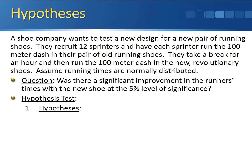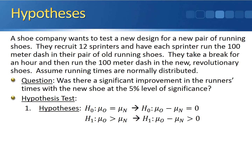Here are the hypotheses. The null hypothesis is that the before and after times are equal, while the alternative hypothesis reflects the idea that the average time for the old running shoes is greater than the average time for the new running shoes. We need the hypothesized difference of 0 in the hypotheses, so we'll subtract the average time for the new shoes from each side. This gives us: the mean time for the old shoes minus the mean time for the new shoes equals 0 in the null hypothesis, and the difference between the two means is greater than 0 in the alternative hypothesis.